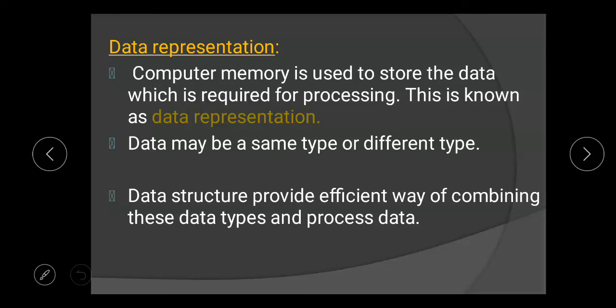Data representation: computer memory is used to store the data required for processing — this is known as data representation. Our data may be of the same type or of different types, and data structures provide an efficient way of combining these different data types and processing that data.